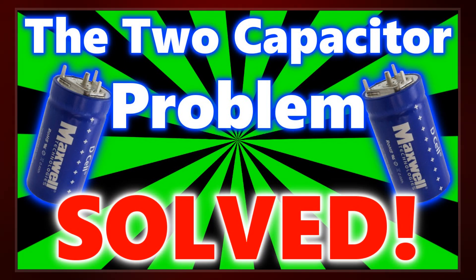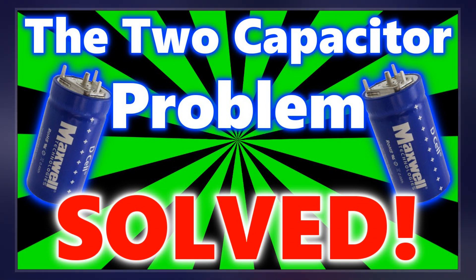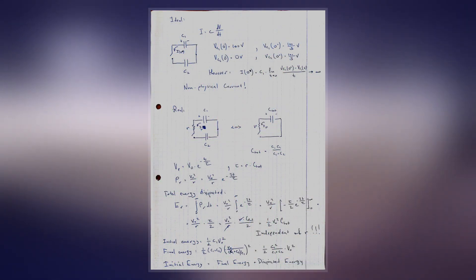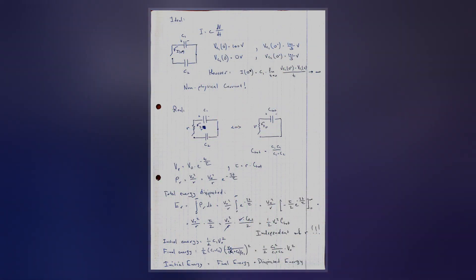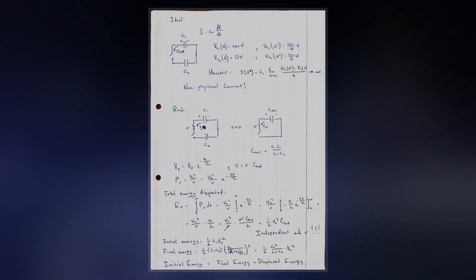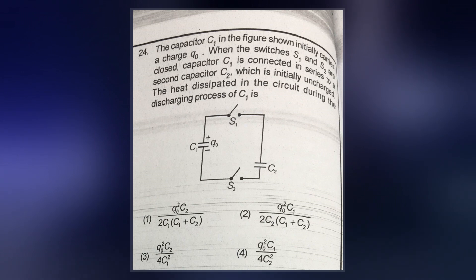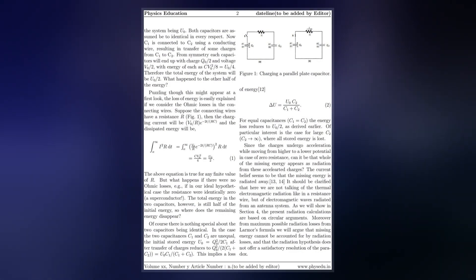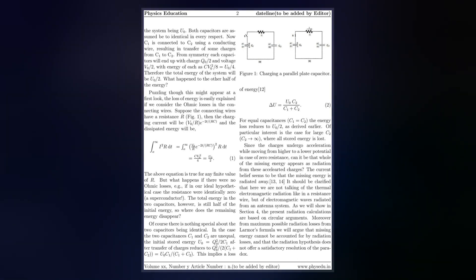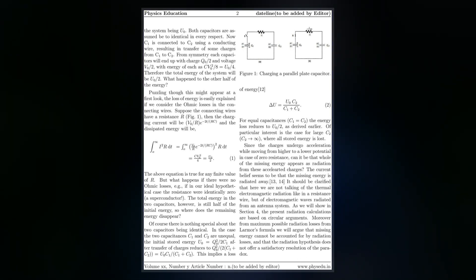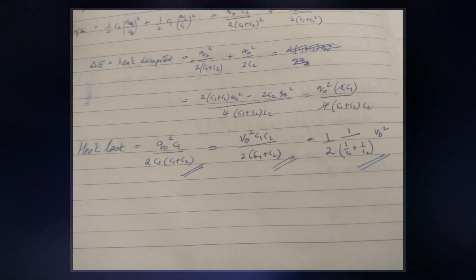One of the capacitors is charged with a voltage of V_I (displayed: V_I). The other is uncharged. When the switch is closed, sum of the charge Q equals C V_I (displayed: Q equals C V_I).